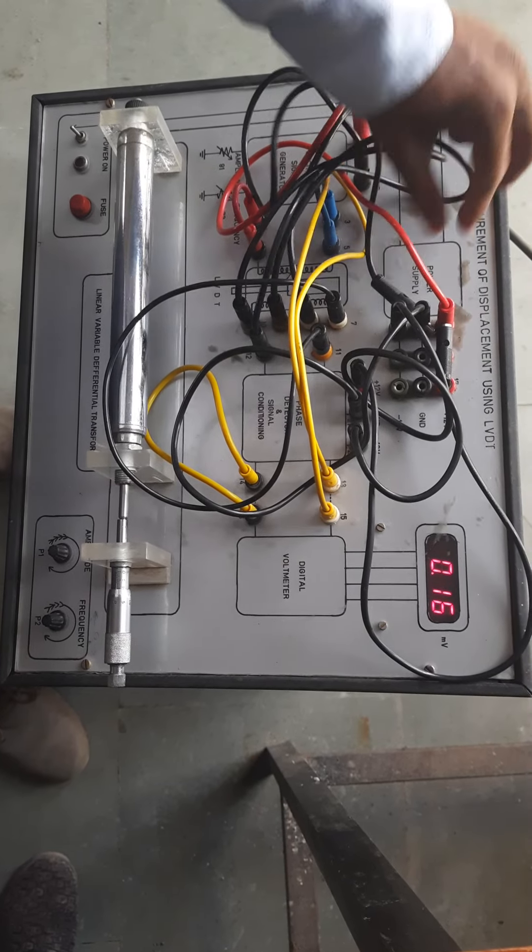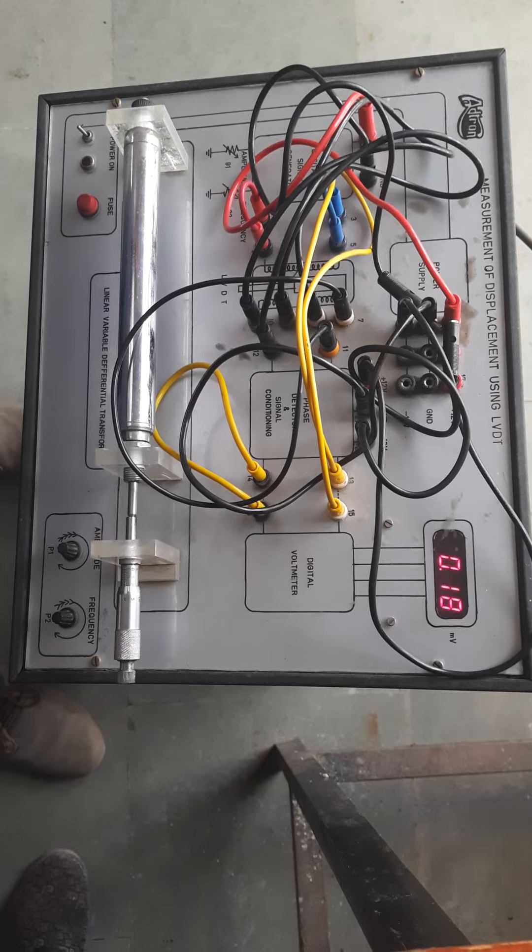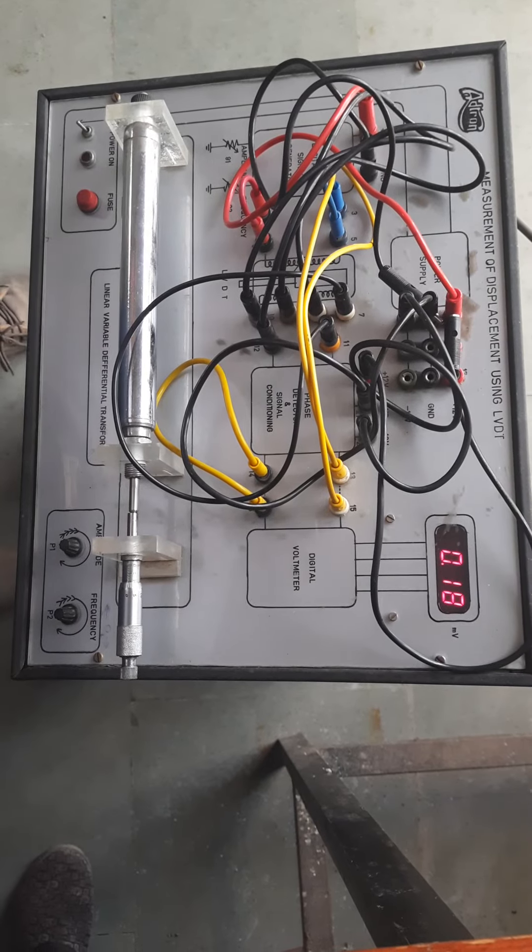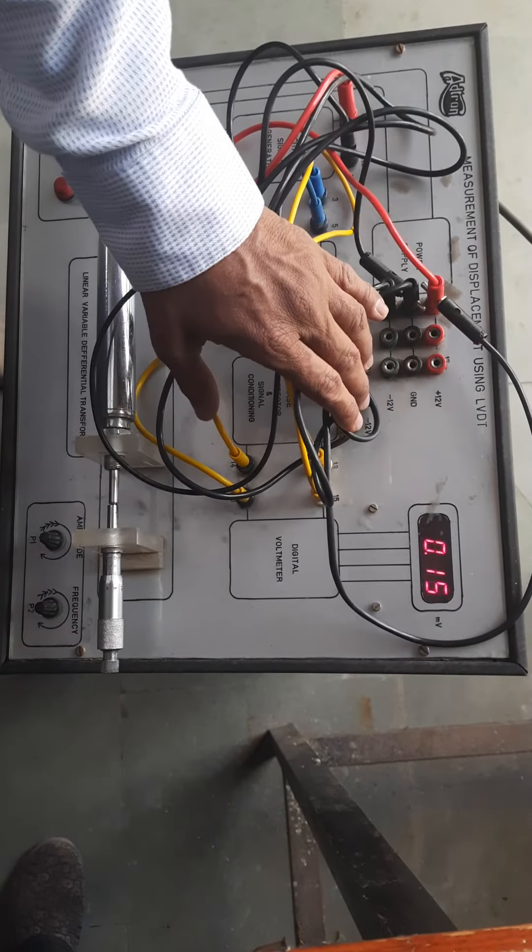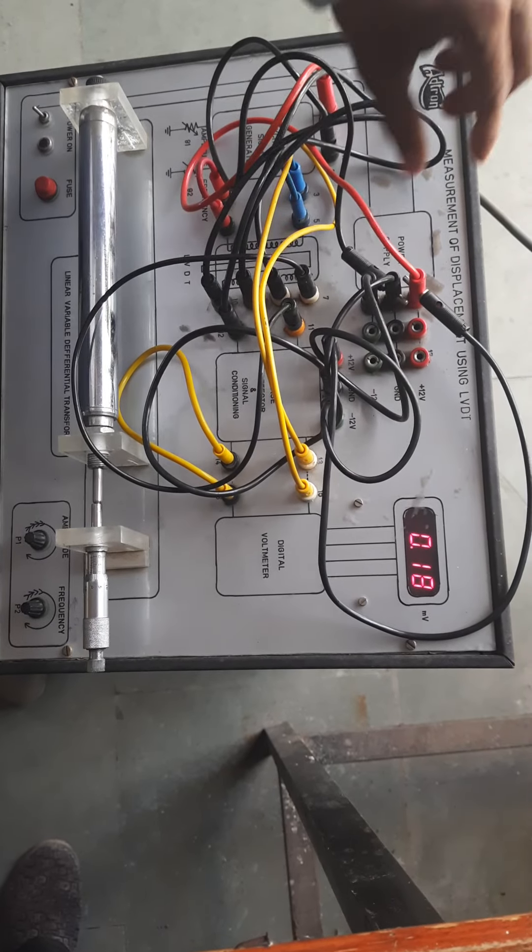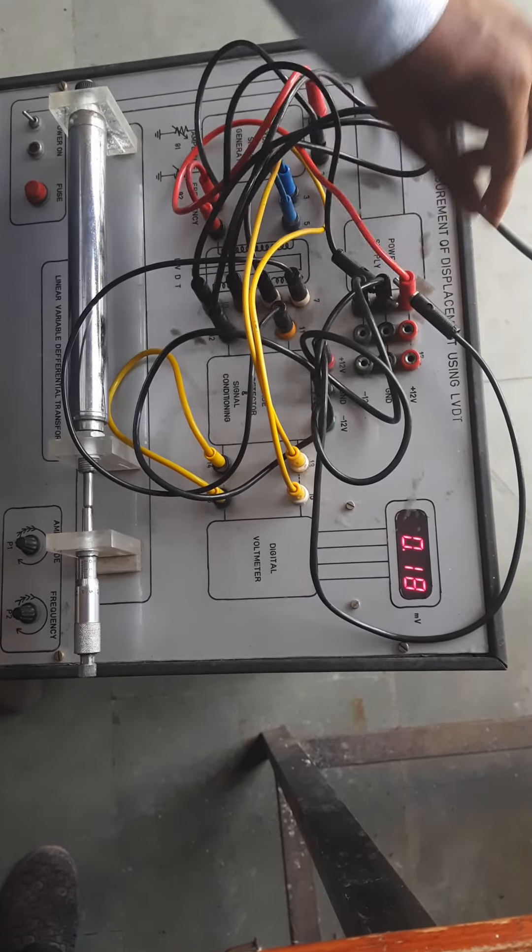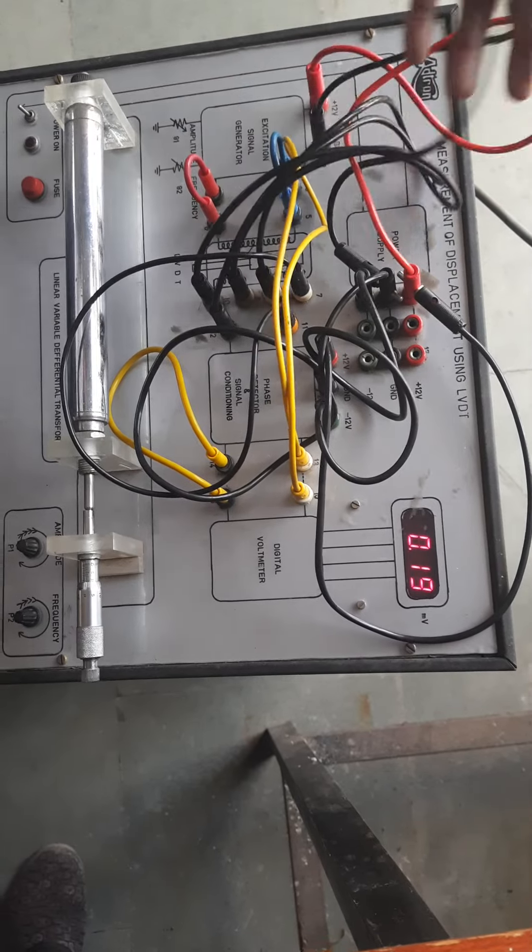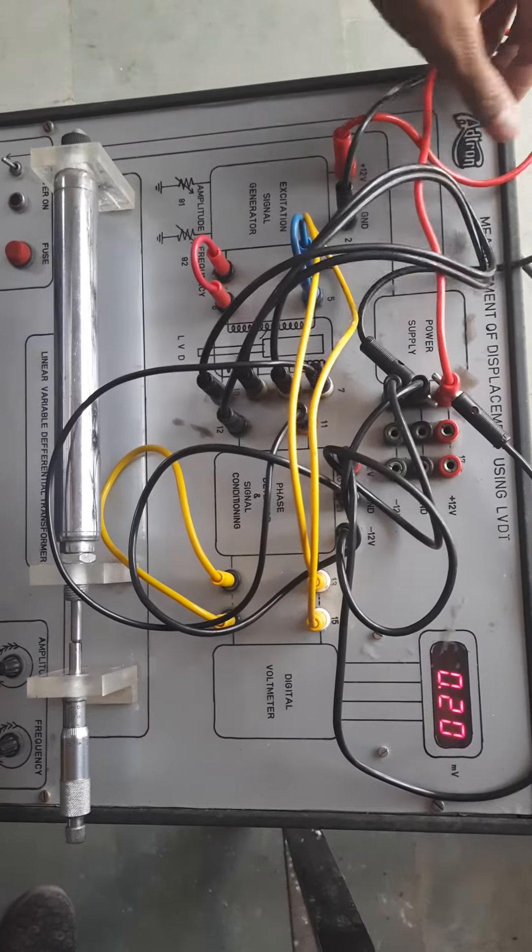Because as taught in the theory section, you know that LVDT requires power supply for its operation. So this is a power supply unit. From here, inbuilt power supply, we are giving 230 volt to this kit. And here is a power supply block which is generating 12 volts. So that 12 volts we are giving to this excitation signal generator block.